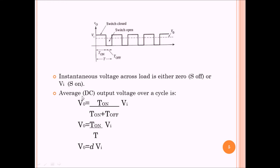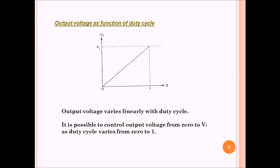The average DC output over a cycle is Ton upon Ton plus Toff. That means the time for which the thyristor was on divided by the total time, multiplied by the input voltage. This factor is also called as D, the duty factor or duty.